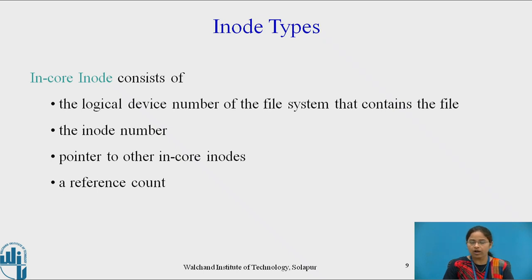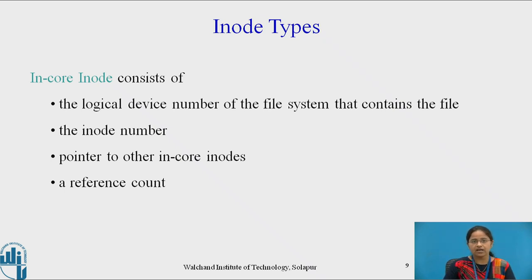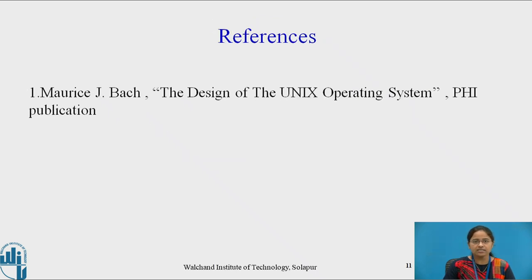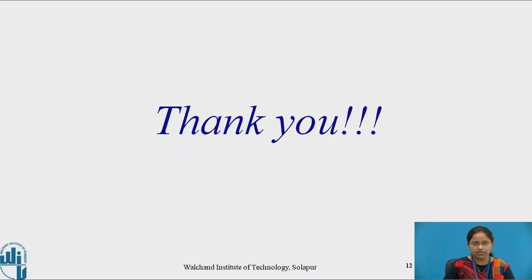This is all about the inode of the file in the Unix operating system. An inode has two types: disk inode and in-core inode. In the next video, we are going to see how this inode can be accessed or released by files in the Unix operating system. These are the references. Thank you.